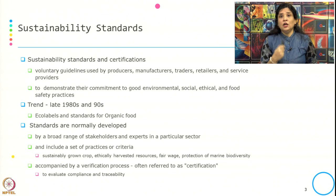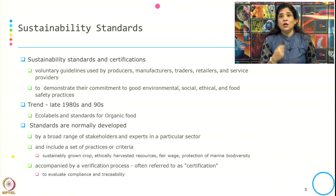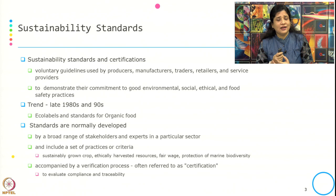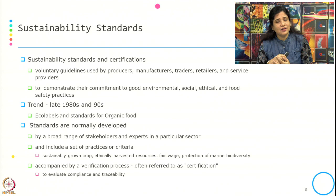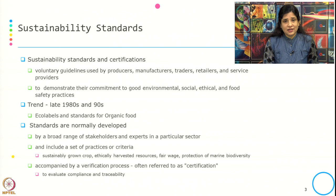The trend of sustainability standards started in the late 1980s and 1990s, and a few of the initial standards or certifications were eco-labeling and standards for organic foods, among others. So the trend of using a standard and obtaining a certification started in that time period.